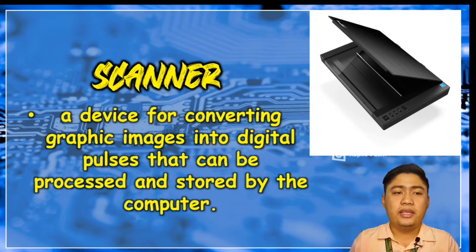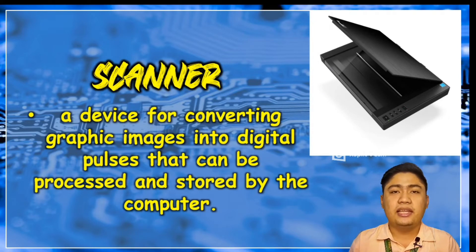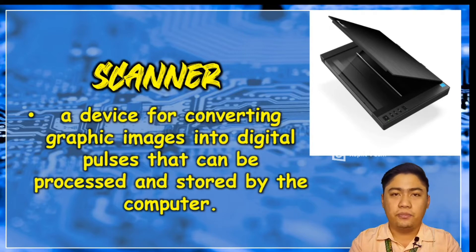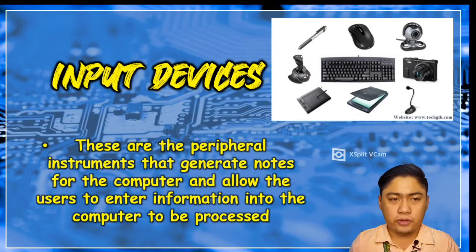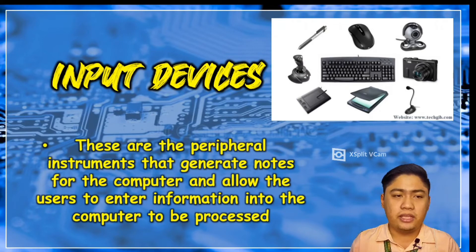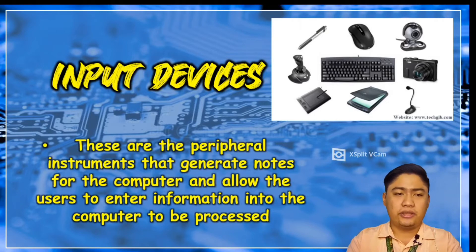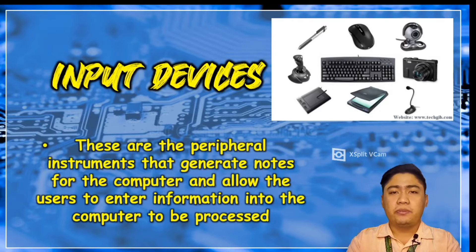The scanner is a device for converting graphic images into digital pulses that can be processed and stored by the computer. It converts your hard copy to soft copy. So those are the basic input devices — instruments that allow users to enter information into the computer to be processed.